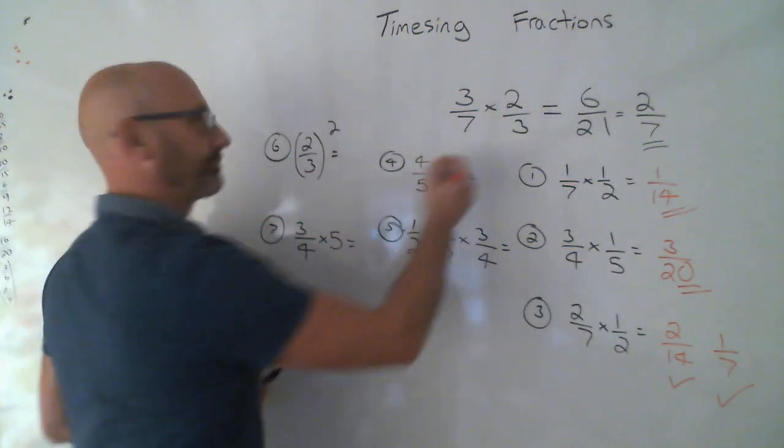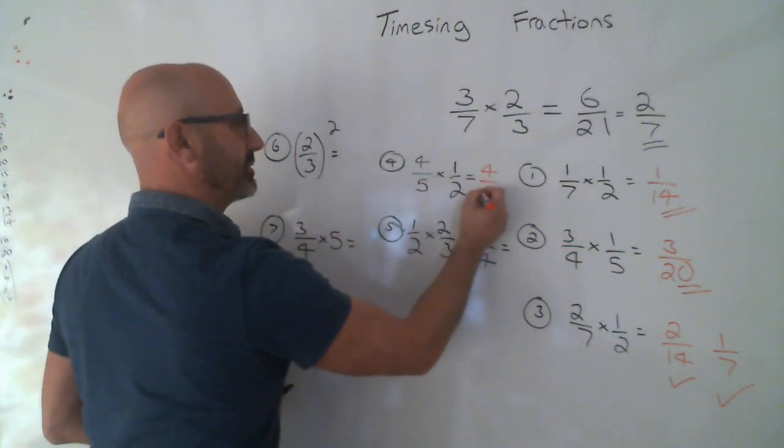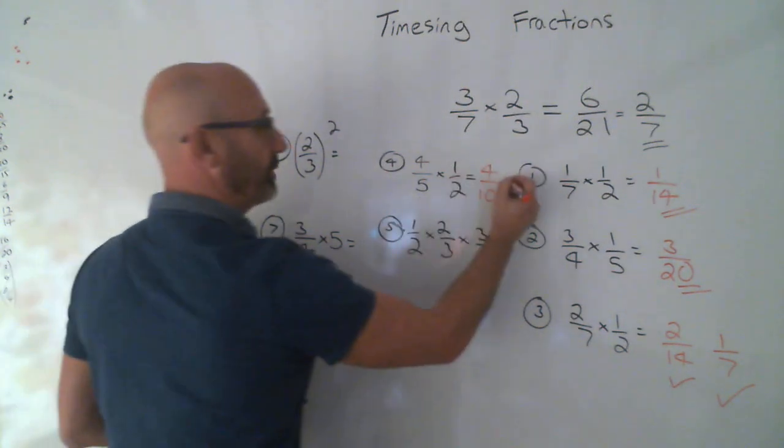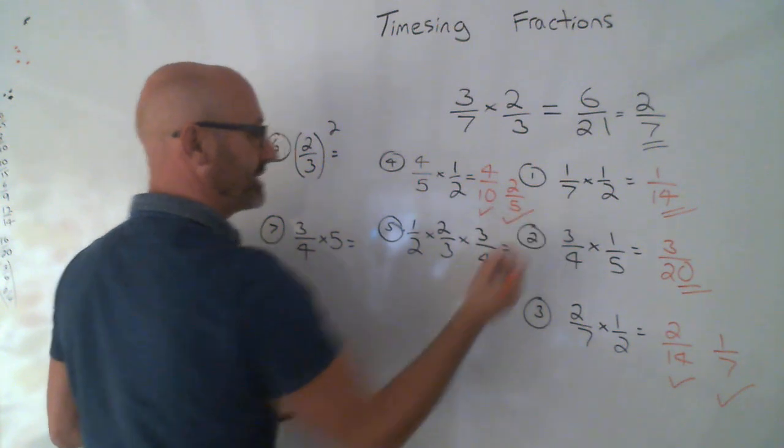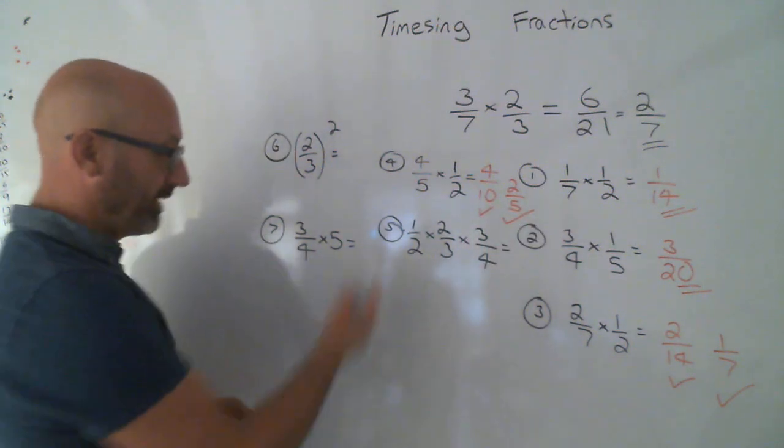Here, times the top, times the bottom. 4 over 10, which is 2 over 5. Little bit of a tick, big tick.